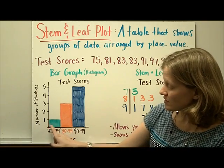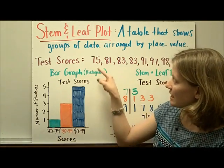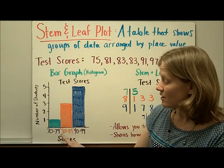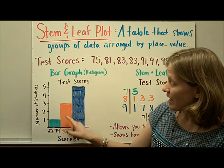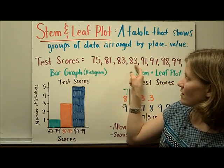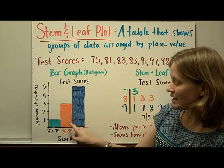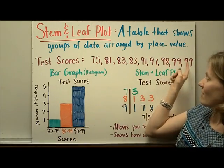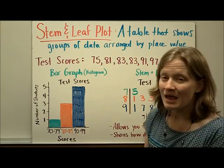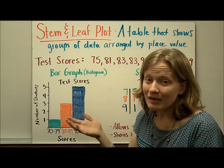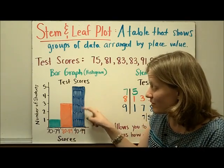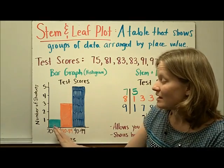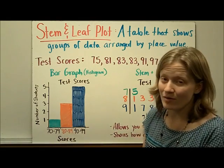Here you can see that we had one test that fell between 70 and 79, three tests that were in the 80s, and five tests that were in the 90s. By looking at this bar graph, we can see that more people did really well — they got an A — than got a B or a C.